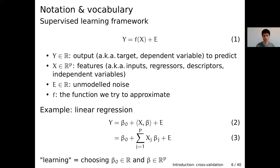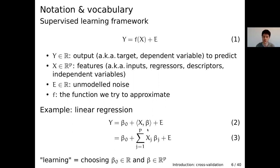We saw the example of linear regression where Y is a continuous variable — for example, blood sugar concentration — and we model it as a linear function of the inputs X. F is a linear function; we model Y as some intercept plus this linear function of the inputs plus some unmodeled noise. Learning in this situation consists in choosing the coefficients of our linear model.